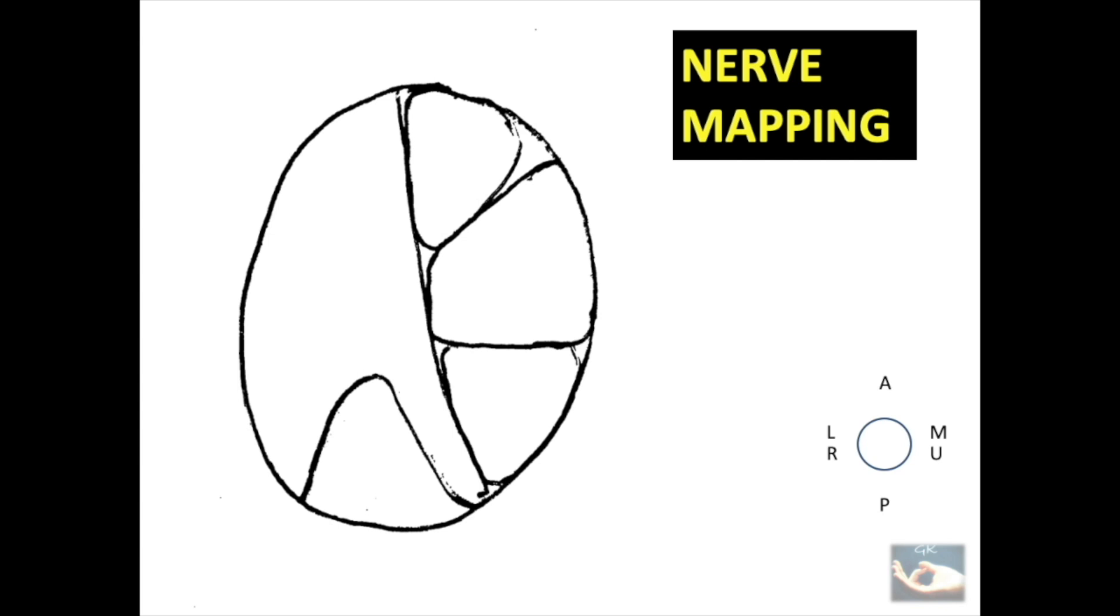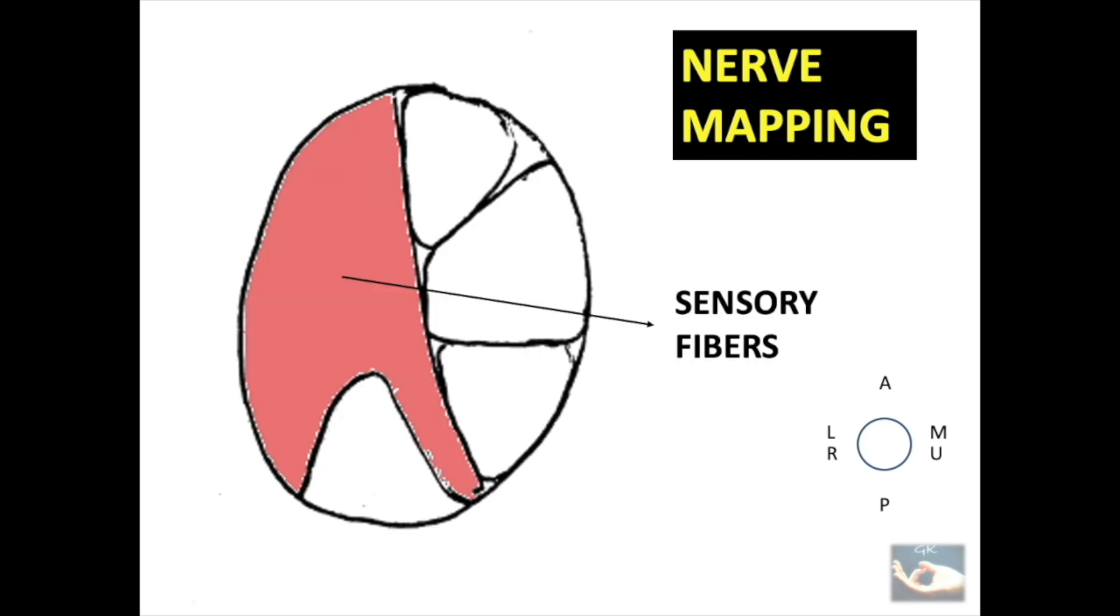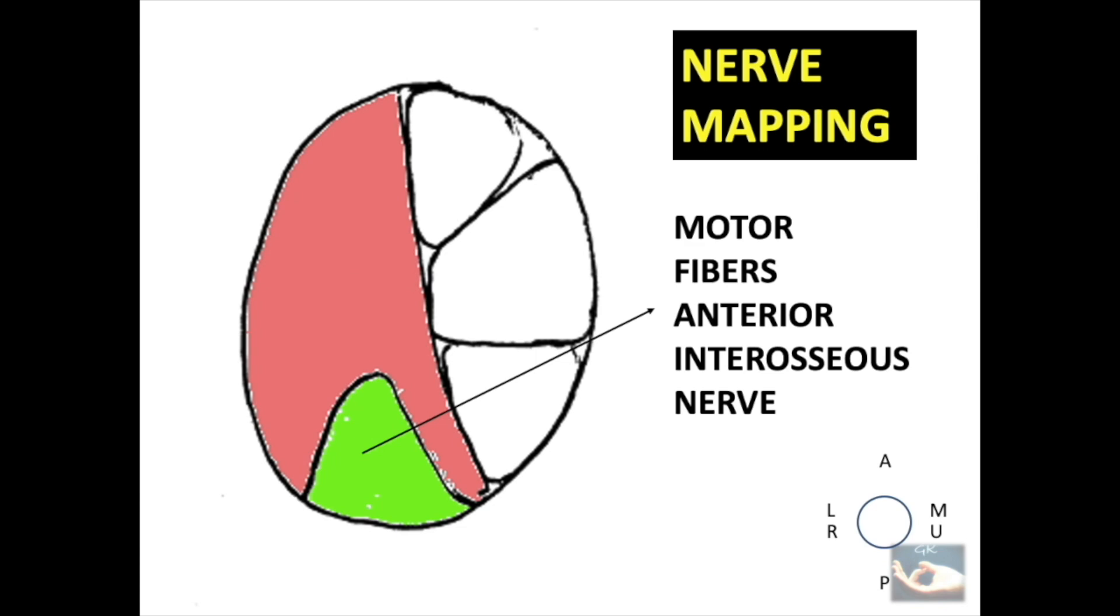For example, consider this cut section of the median nerve of the right upper limb at the level of the middle of the arm. The key on the right side bottom of the picture shows the orientation. This shows the sensory fibers occupy most of the lateral half of the nerve with the remaining part of the lateral half occupied by the motor fibers destined for the anterior interosseous nerve.